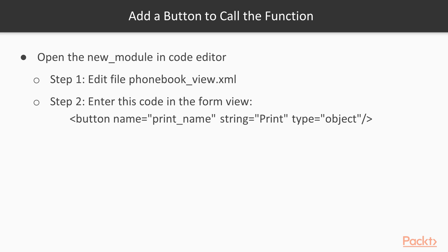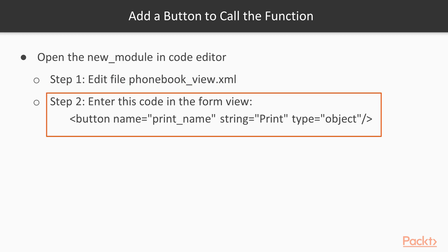The new module has been opened in the code editor. We are going to edit the file phonebook_view.xml and we are going to enter the code in the form view. It says: button name equals print_name, the string will be 'Print', and type is 'object' so that it knows that a Python function needs to be called.